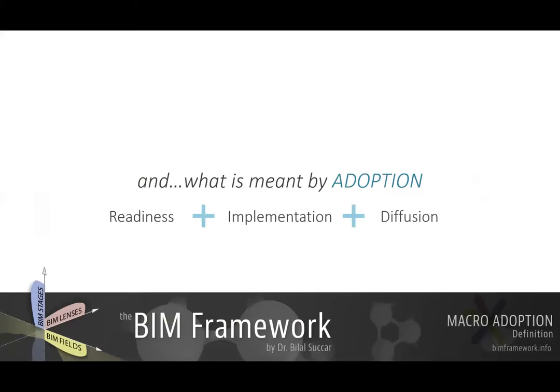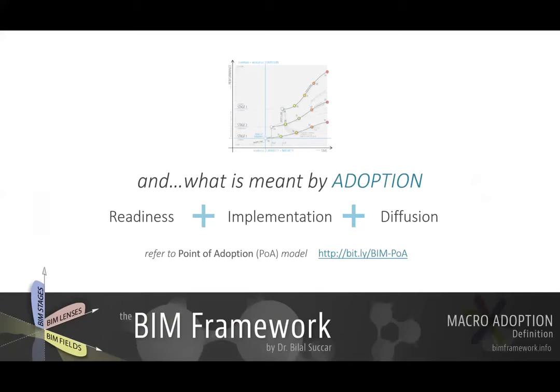Adoption also refers to the third concept, which is diffusion — the spread of implementation. If implementation within a country is done only by one company, we say it's not diffused. But when adoption is diffused across multiple organizations, we refer to this as diffusion. So we have readiness, implementation, and diffusion — all three together are referred to as adoption. This will be covered in the point of adoption model video. You can also refer to the point of adoption model entry on the BIM framework.info blog.